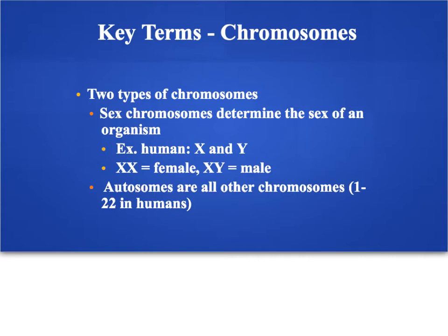Before we get into the details of meiosis, there are a bunch of vocabulary words we have to be familiar with. First, there are actually two different types of chromosomes in an individual. The first type is called sex chromosomes — these are the chromosomes that contain the genes that give you your sex characteristics, like hormones and similar things. In humans there are two types: the X and the Y chromosome. If you're female, you have two X chromosomes, and if you're male, you have an X and a Y.